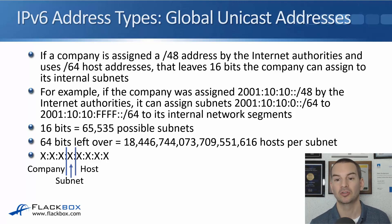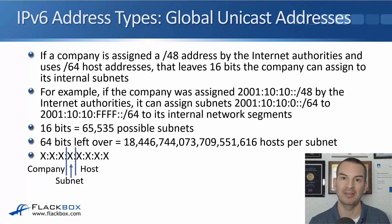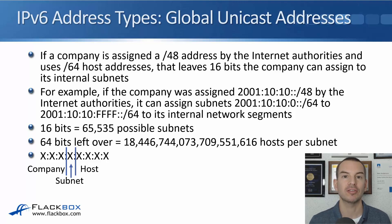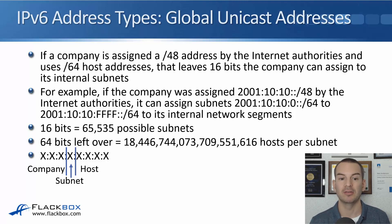For example, if the company was assigned 2001:10:10::/48 by the internet authorities, that leaves subnets 2001:1010:0::/64 through 2001:1010:FFFF::/64 to be assigned to its internal network segments. They've got 16 bits to play with for dividing the larger /48 block into smaller subnets. 16 bits means 65,534 possible subnets, which should be plenty for most situations.